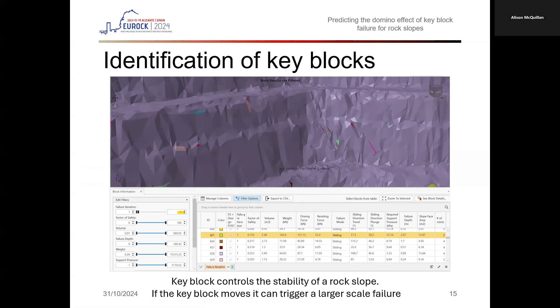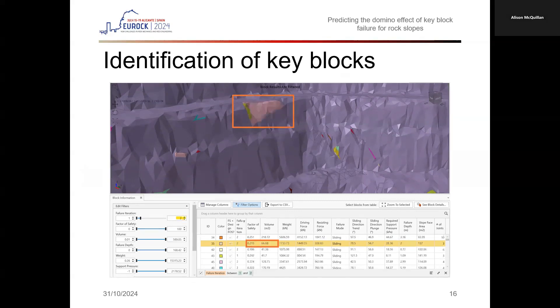In this section of slope, using successive iteration function, we can identify this key block. Should this block fail by sliding out of the face? This larger block can now kinematically slide out of the face. This highlights to us that if we want to minimize the potential for block failure, we need at least to stabilize this key block to prevent larger failure from potentially occurring.